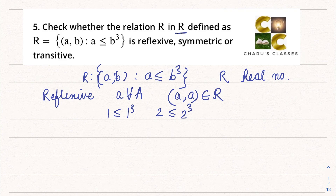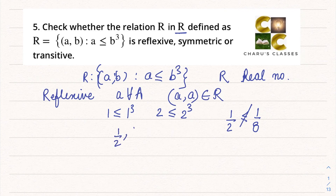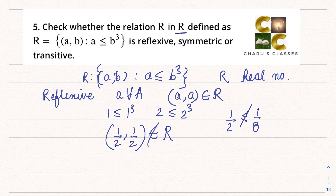But if I take any rational number, suppose I take 1/2, then 1/2 cubed comes as 1/8. So 1/2 is not less than or equal to 1/8, which means (1/2, 1/2) does not belong to the relation. So here we can say it is not reflexive.